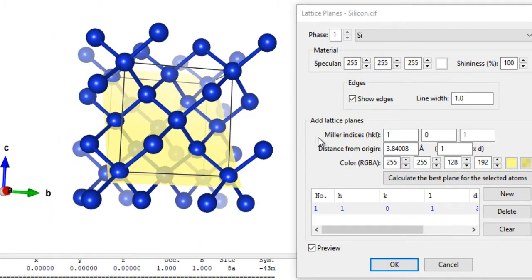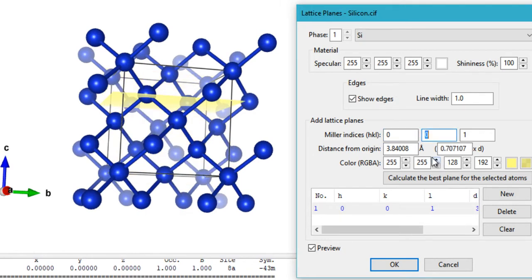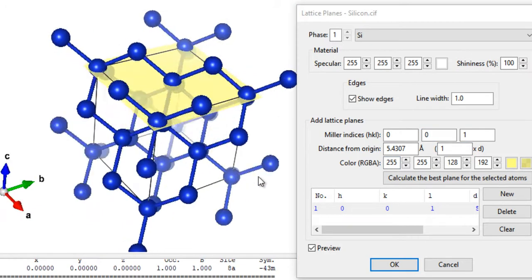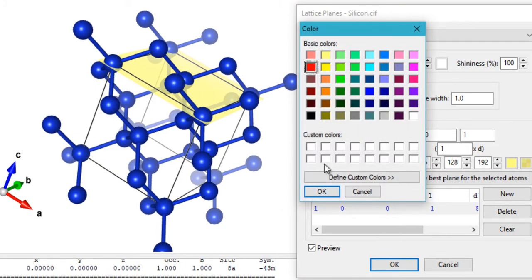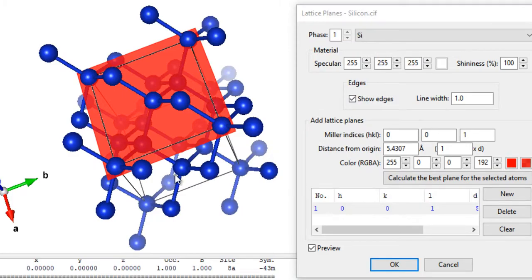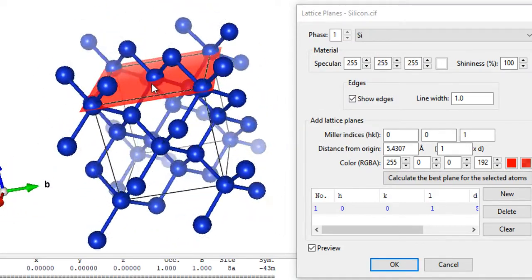That's how you can display or visualize lattice planes. Just keep clicking Enter and then change it to 1. Now you're visualizing the 001 plane, and you can even change the color of these planes, for example if you want to use red or any other colors.